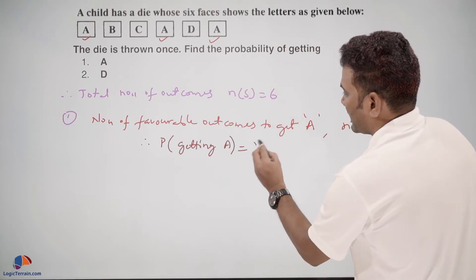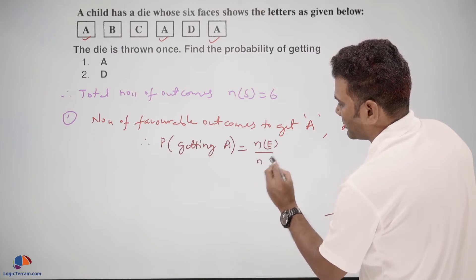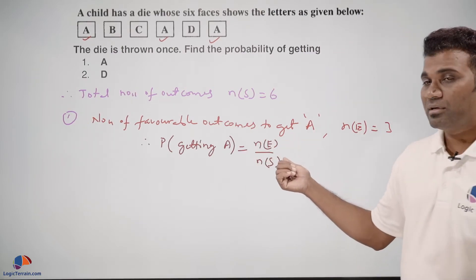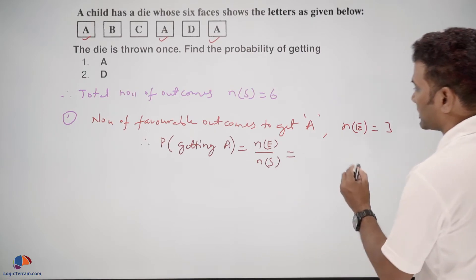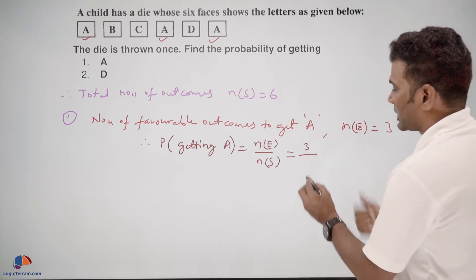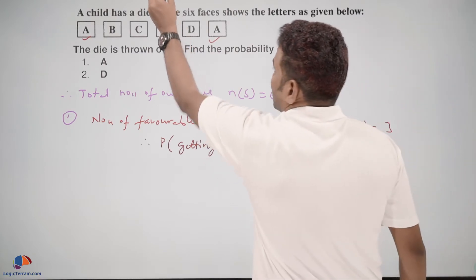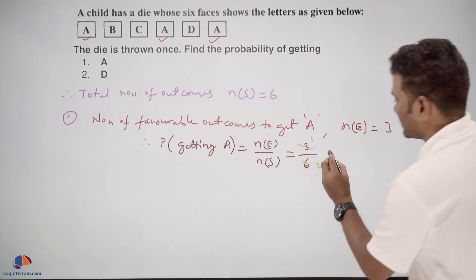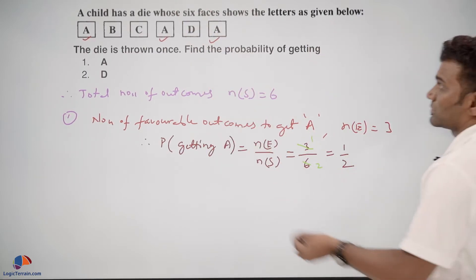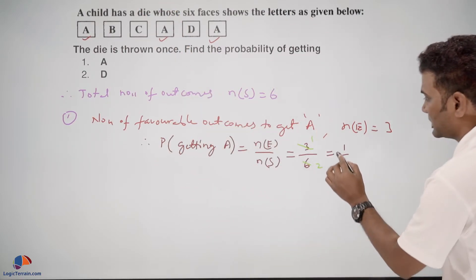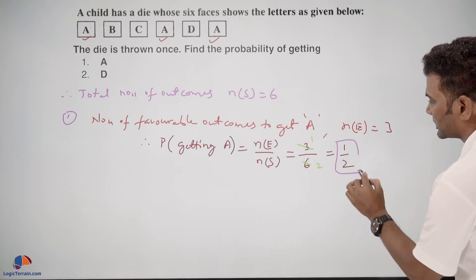is n(E) upon n(S), that is number of favorable outcomes upon total number of outcomes. This becomes: favorable outcomes are 3 and total number of outcomes are 6. Three divided by six gives us 1 upon 2. So our required probability for getting A is 1/2.